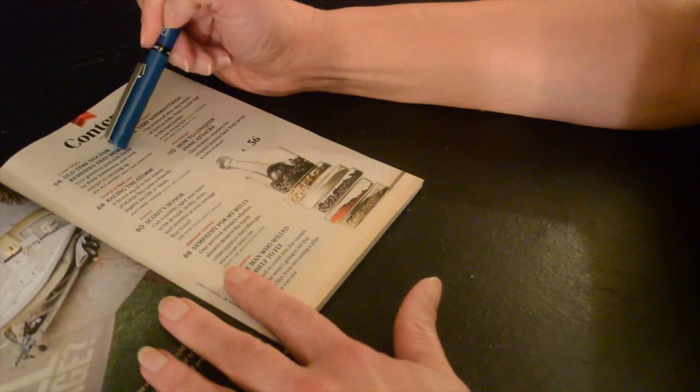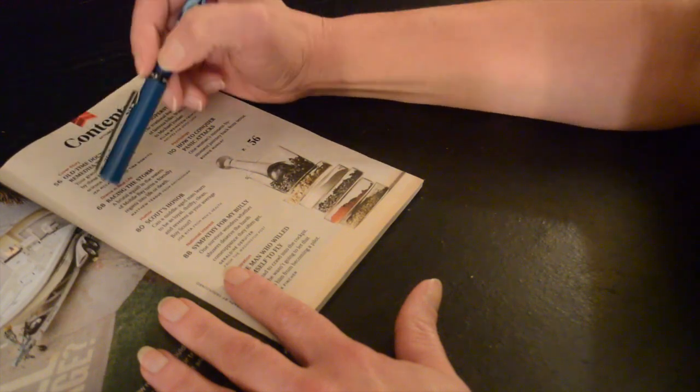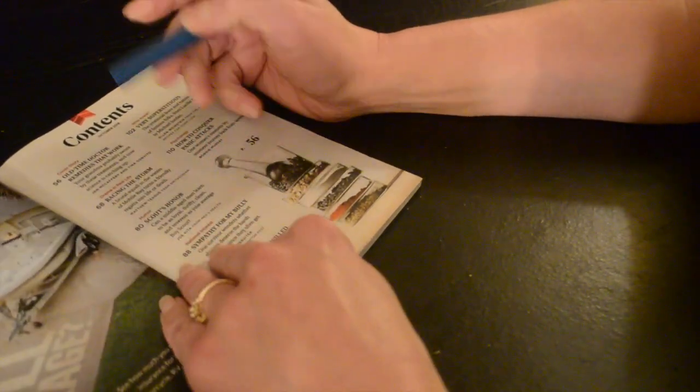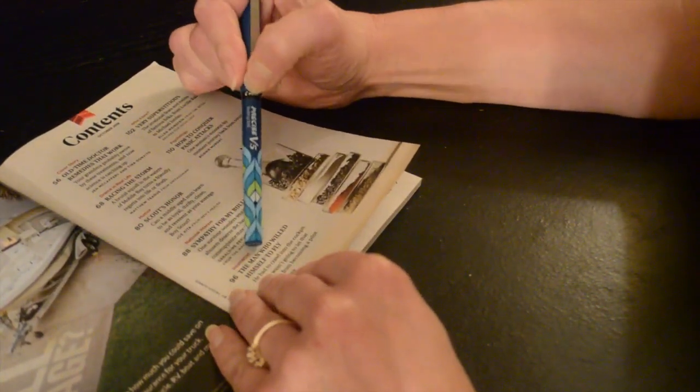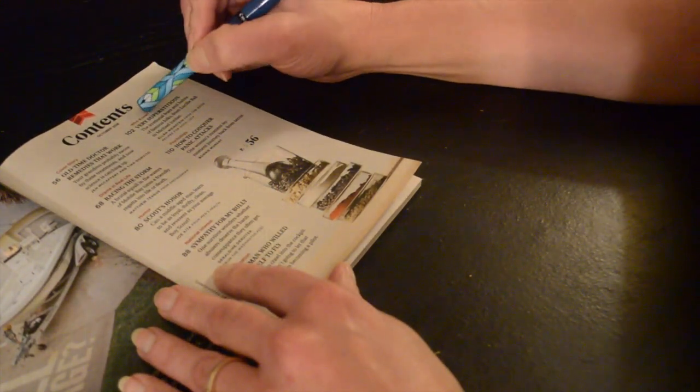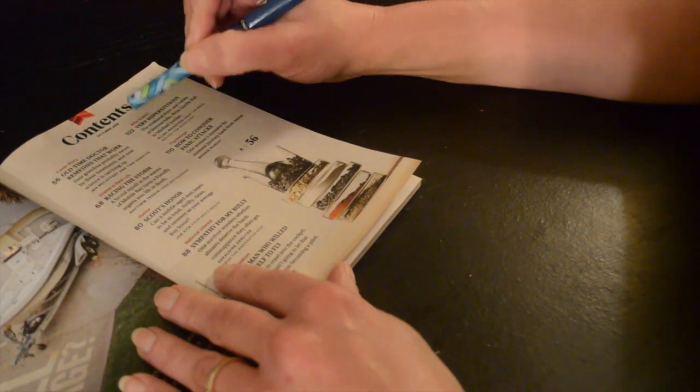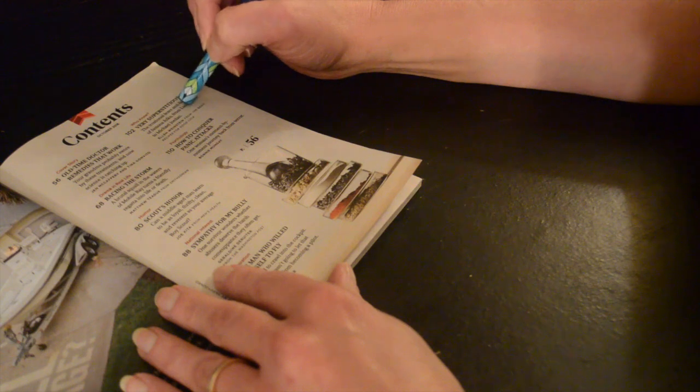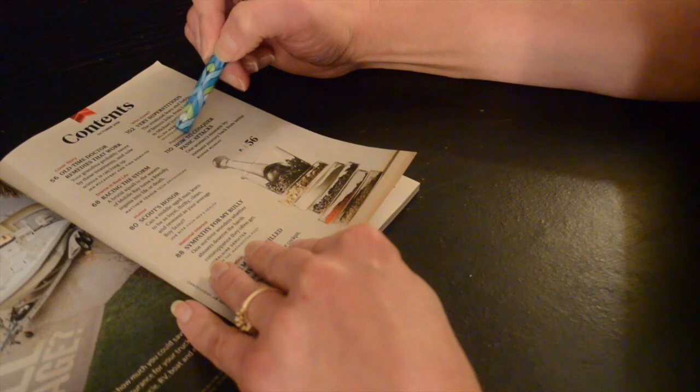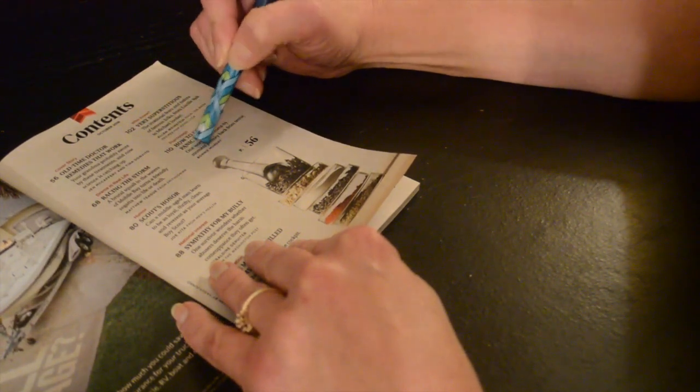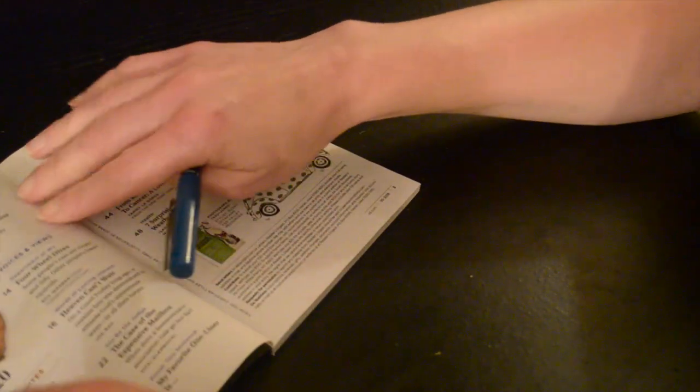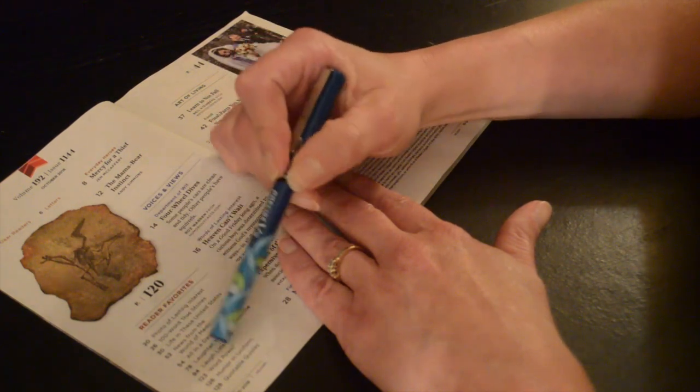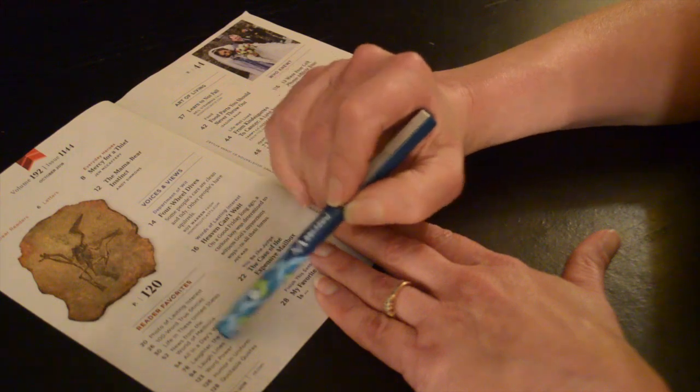Old time doctor remedies that work. I think someone was interested in that one. Racing the storm. Scout's honor. Sympathy for my bully. I kind of wanted to read that one. The man who willed himself to fly. This one I want to read. Someone had suggested this one. Very superstitious. The irrational fears and habits of famous folks from Lucille Ball to Michael Jordan. And this one also was requested. How to conquer panic attacks.